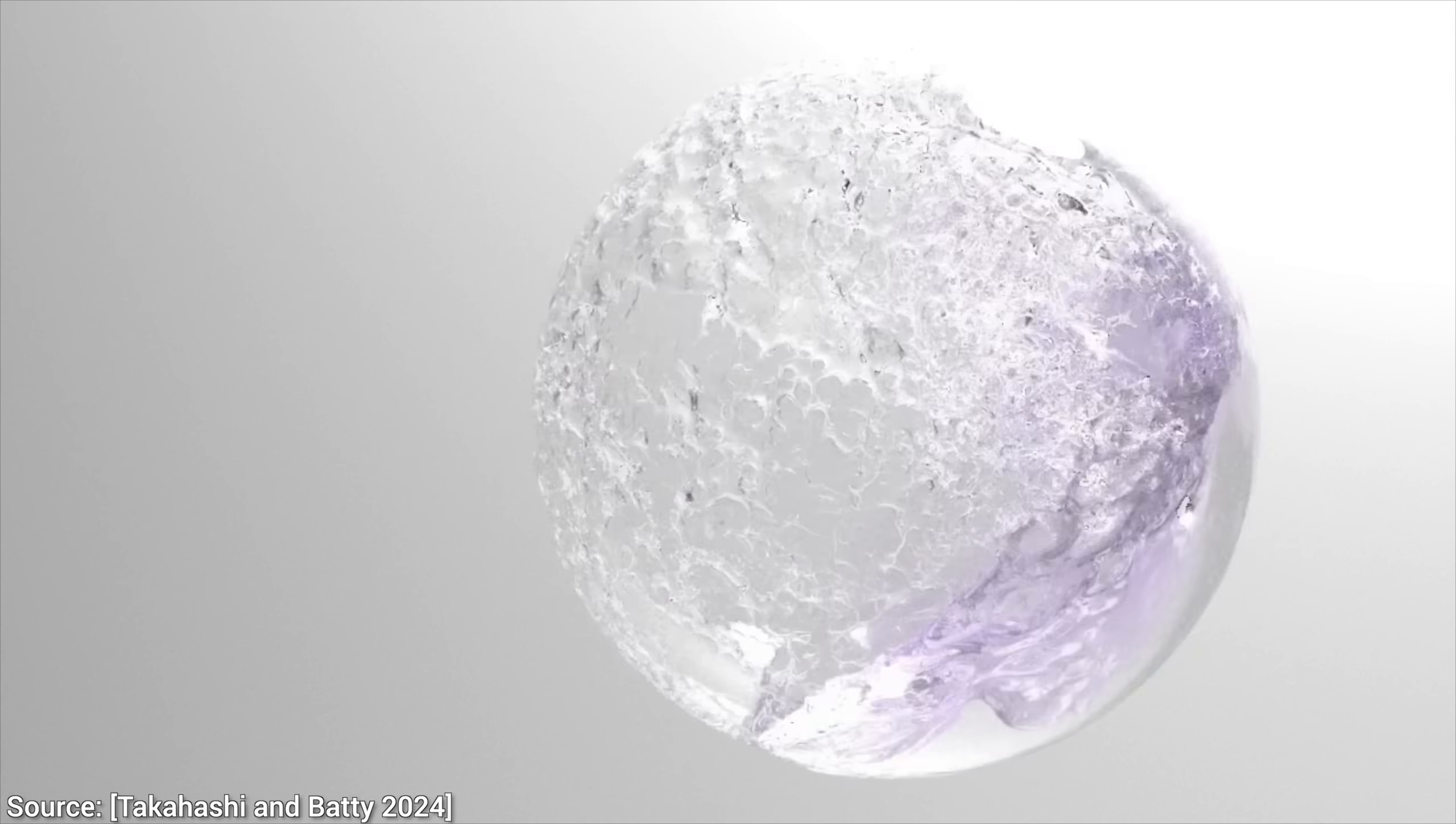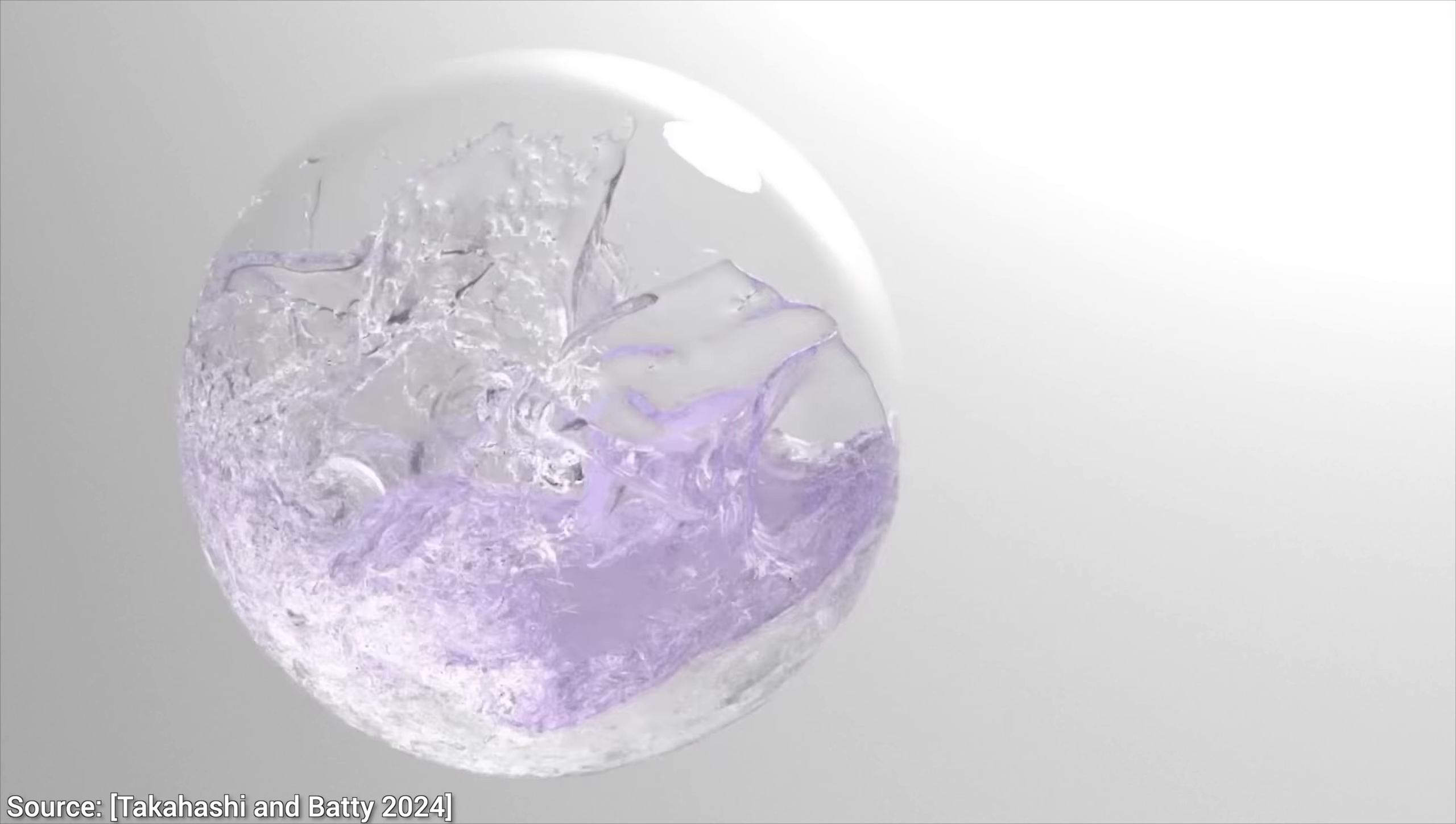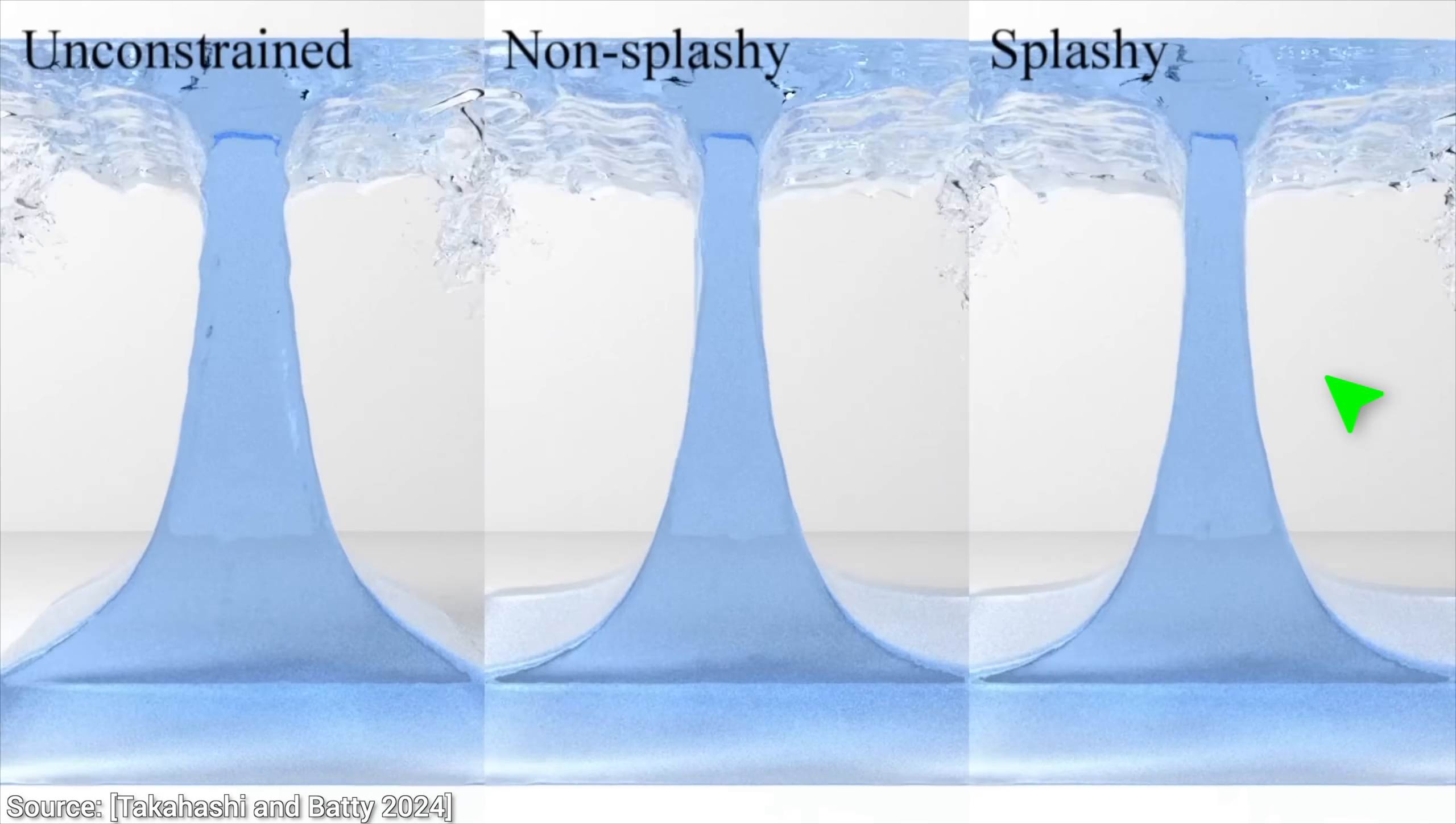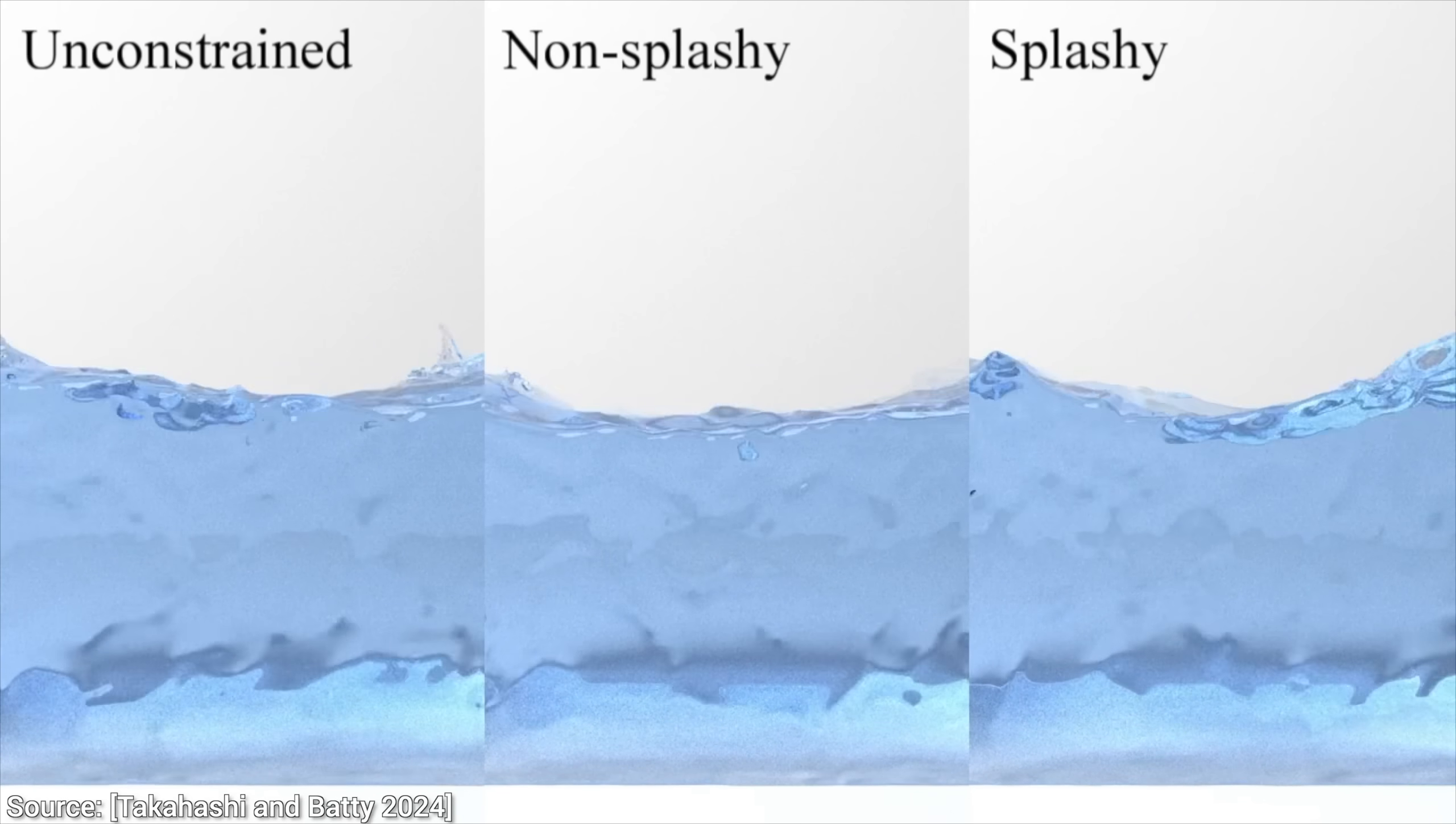And finally, this other work shows how to simulate highly dynamic scenes where a liquid bunny is sloshing in a moving sphere. And in the meantime, it makes sure to have just the right amount of splashiness that previous methods failed to capture correctly.